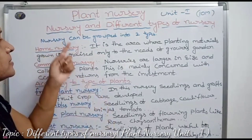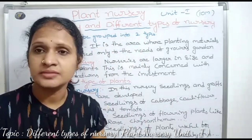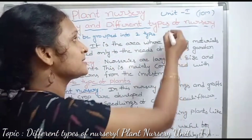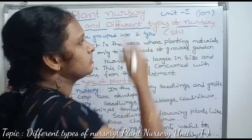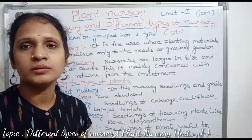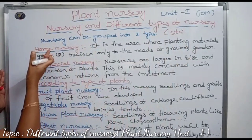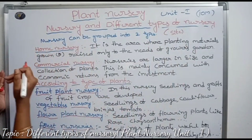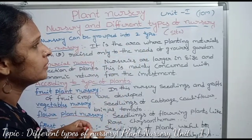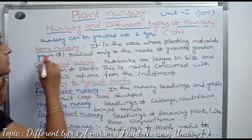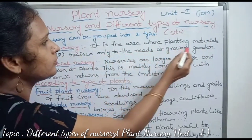Nurseries can be grouped into two types again — classified into two types based on the site. Based on the site and place, there are two types: home nursery and commercial nursery. Home nursery is the area where planting materials are raised only to meet the needs of the grower's garden.